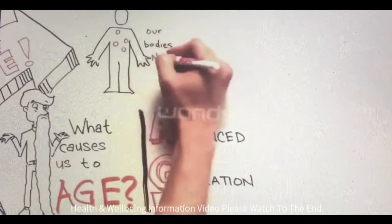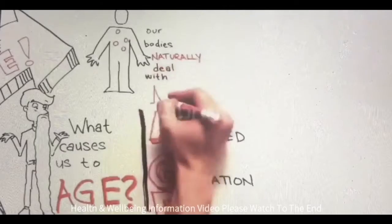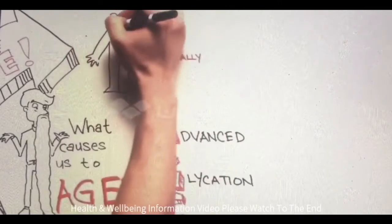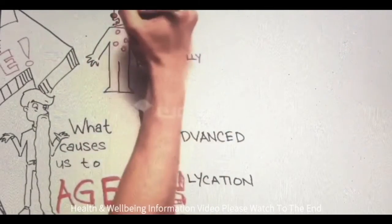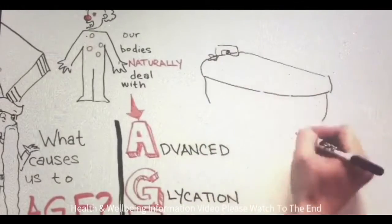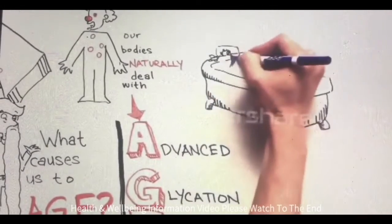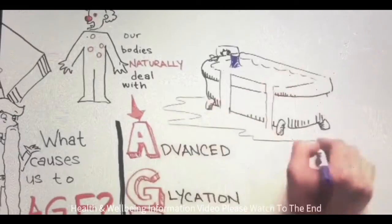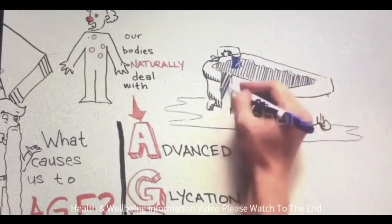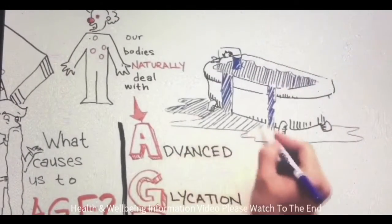Problems happen when we get a little crazy and overload the body with more than it can handle. It's a little like a bathtub—if you turn on the water and the pipes are clogged, the tub fills up. AGE levels are the same: if you're consuming AGEs faster than